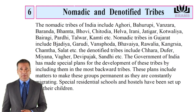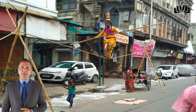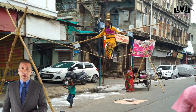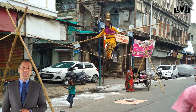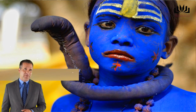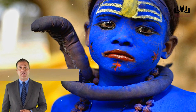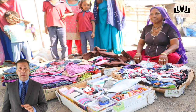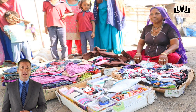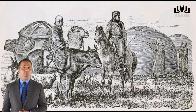भारत की विचरती जातियों में अघोरी, बहुरूपी, बंजारा, बरेंडा, भाम्ता, भोवी, चितोडिया, हेल्वा, इरानी, जातिगर, कोट्वालिया, बेरागी, पारधी, तलवार, कामती आदि का समावेश होता है.